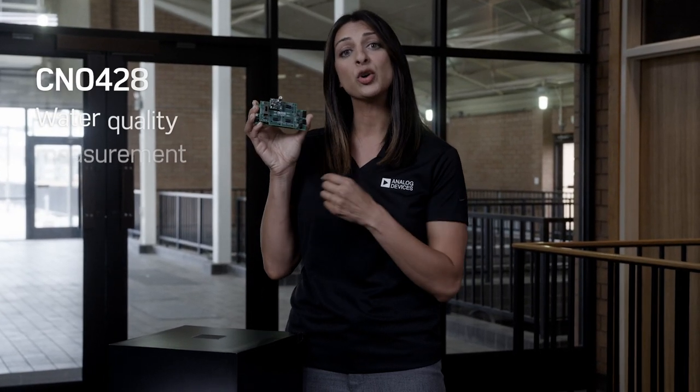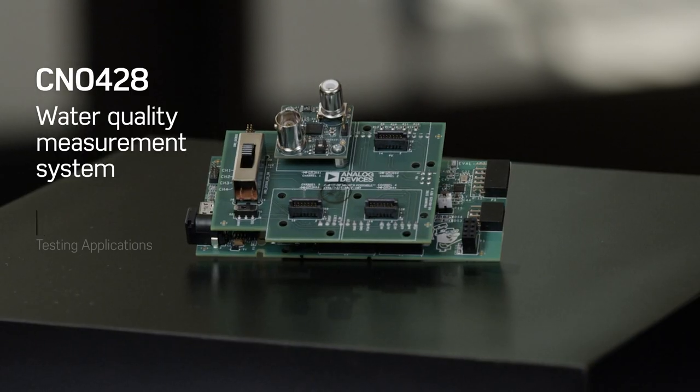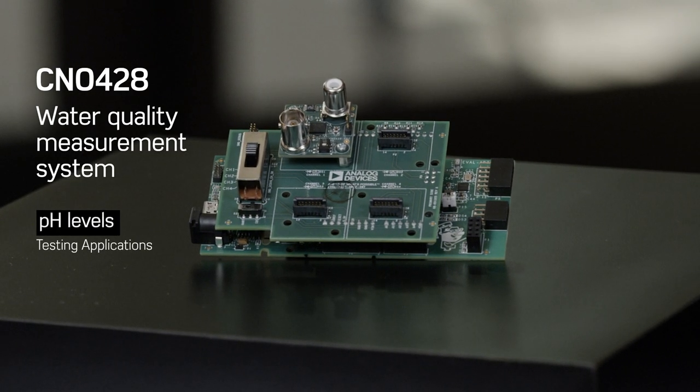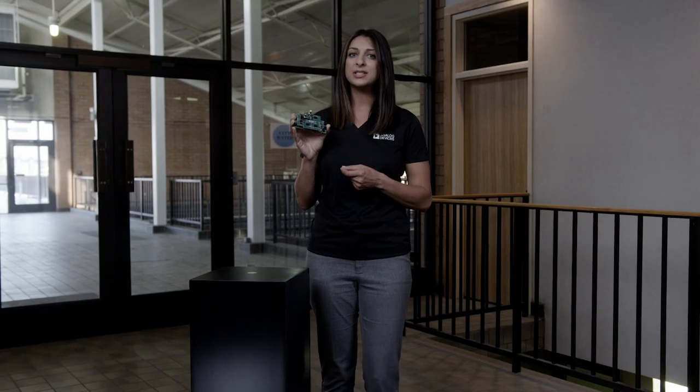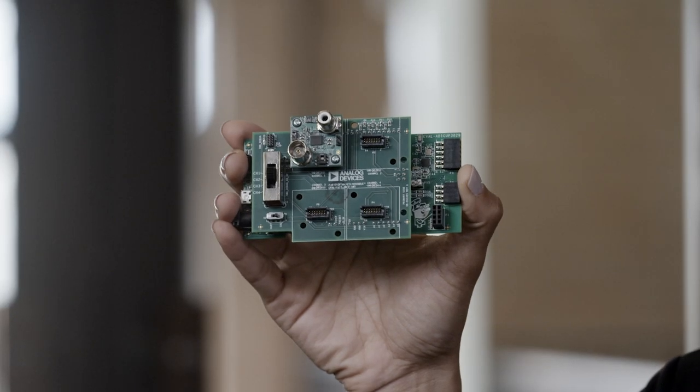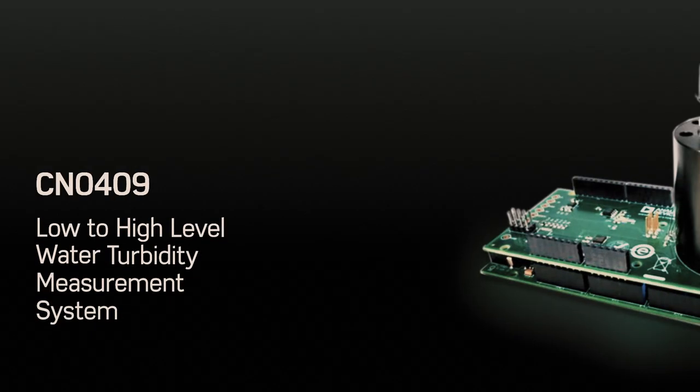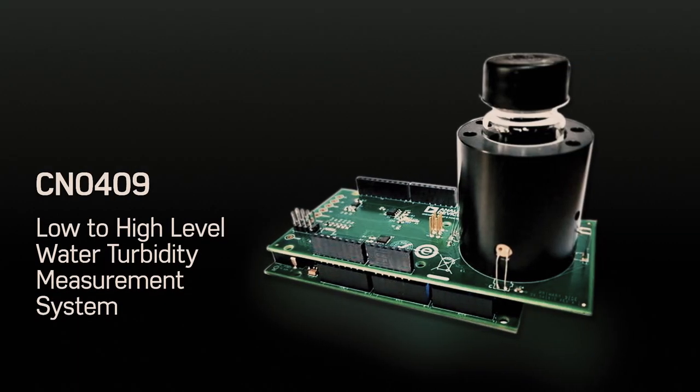The first is the CN0428 Water Quality Measurement System. It can be leveraged to test pH levels, conductivity, and oxidation reduction potential. This versatile system allows up to four probes to be connected at one time, making it possible to capture several different water quality measurements quickly. The other reference design is the CN0409 Water Turbidity Measurement System.